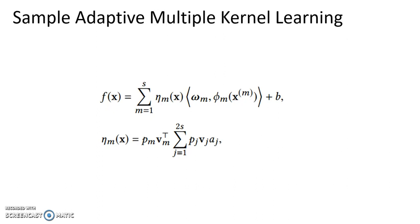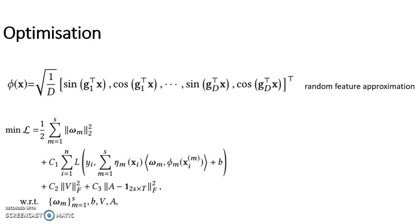We further add a new vector a in eta mx to represent unique features of the set of railway points that generated a sample x. We use random feature approximation techniques to approximate the kernel mapping. In this way, we can calculate the gradients with regard to omega b, v, a and use gradient methods to minimize the loss function.